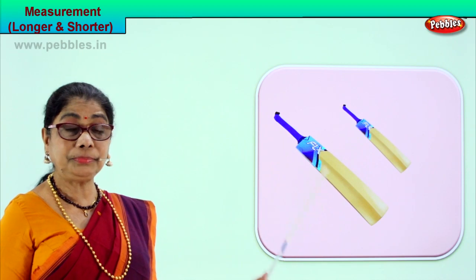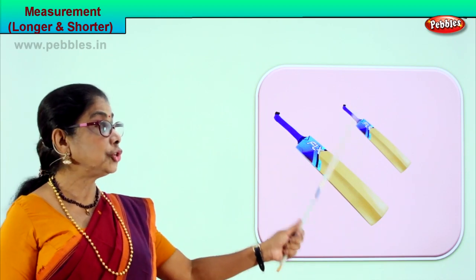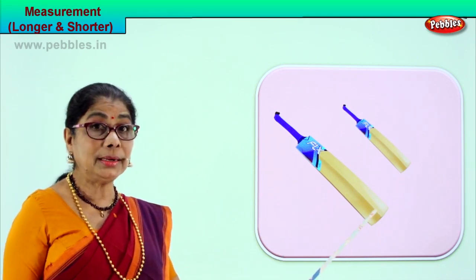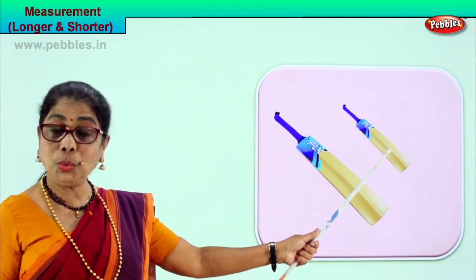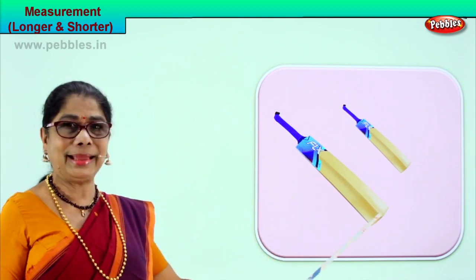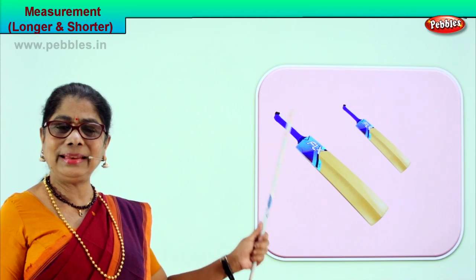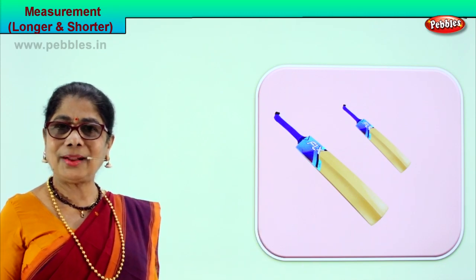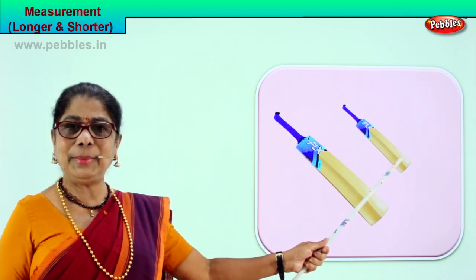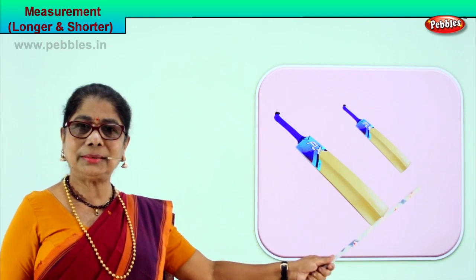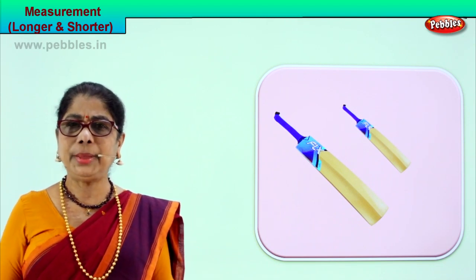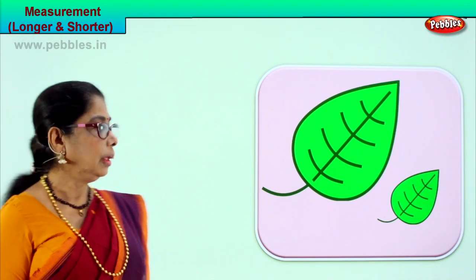Look — we have bats here. One long bat and a short bat. We say this bat is longer than this bat, or we say this bat is shorter than this bat. Longer bat — get me the longer bat. Daddy says please get the shorter bat for the little baby to play. Shorter, longer. Let's look at another picture.